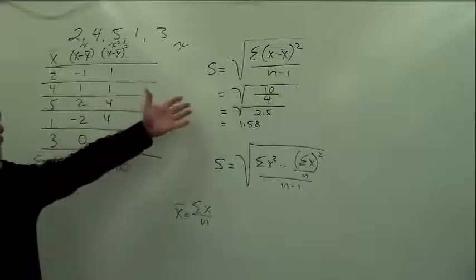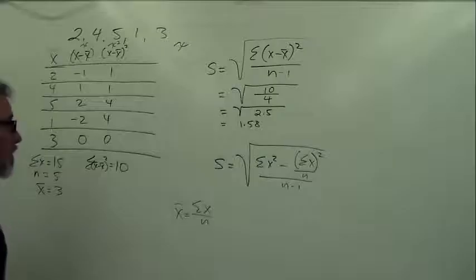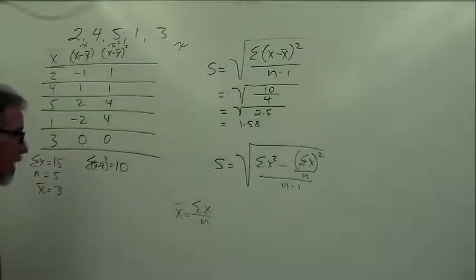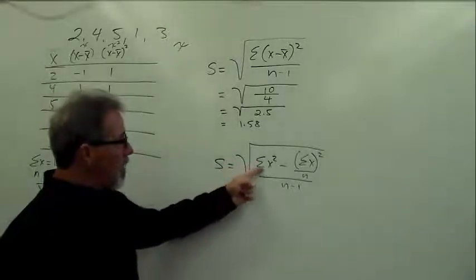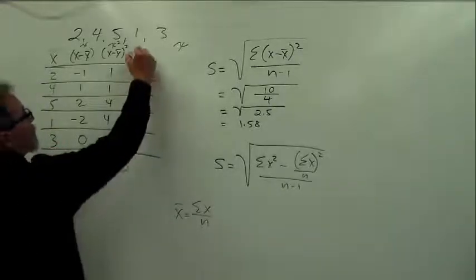So this is one way to solve for the raw score standard deviation. You deal with negative numbers, and that freaks people out sometimes, to tell you the truth. This is another version. Let's do this one instead. I'll do this one in red. So on this one it says, let's start here. Sum of x squared. Well, we don't have any x squared, so we've got to make an x squared column.